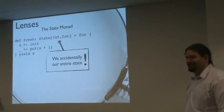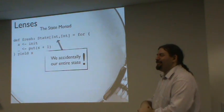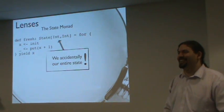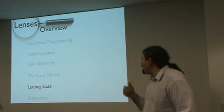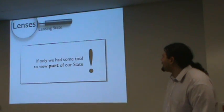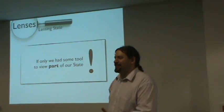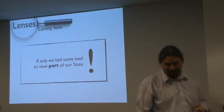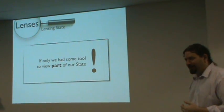But we kind of accidentally, our entire state, we didn't have any room left in our state for anything else. It's just a counter right now. So, if only we had some kind of tool that knew how to look in something for some piece of it. I don't know if there's enough clues in the slide here to give it away, what I'm thinking of.